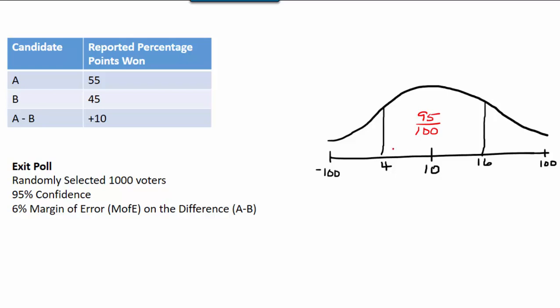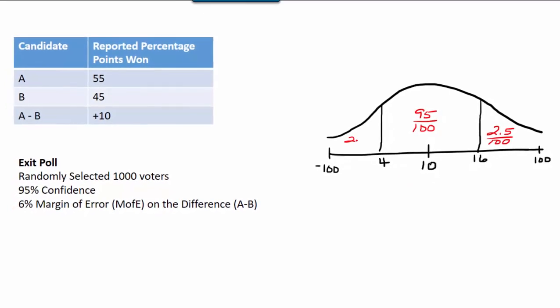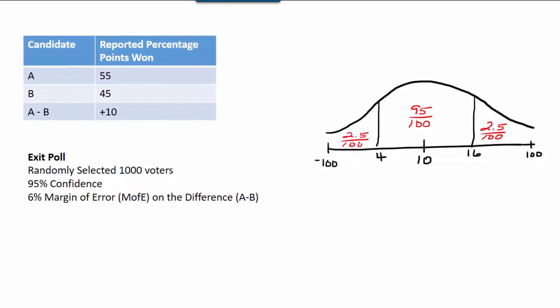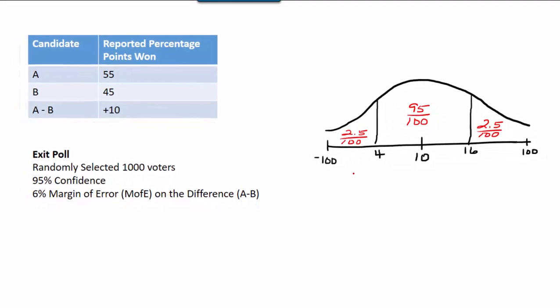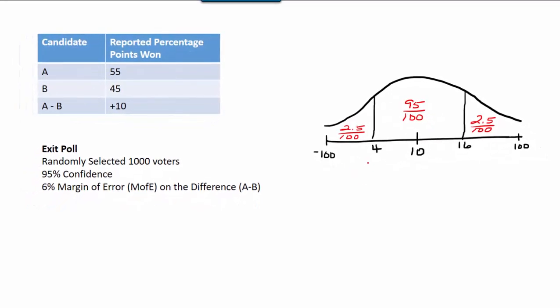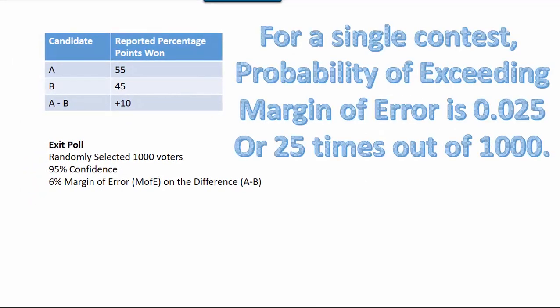The other 5 out of 100 would be below or above. Specifically, 2.5 out of 100 would have results above, and about 2.5 out of 100 would result in a difference lower than the actual difference by more than the margin of error. This means that for a single contest, the probability of exceeding the margin of error — having a difference greater than 16 — is 0.025, or 25 times out of 1,000.